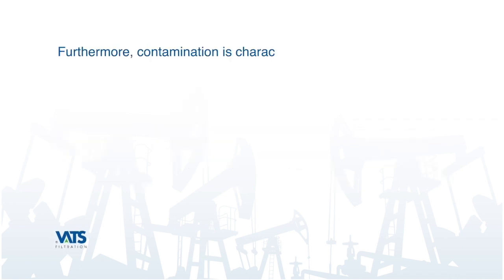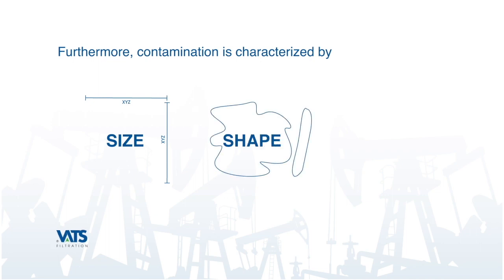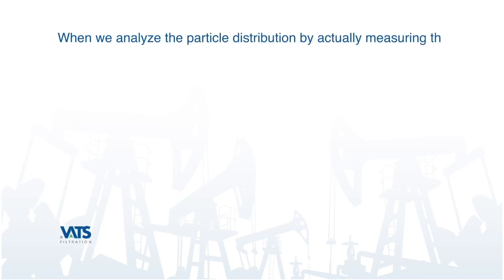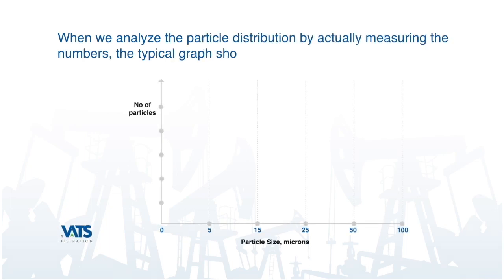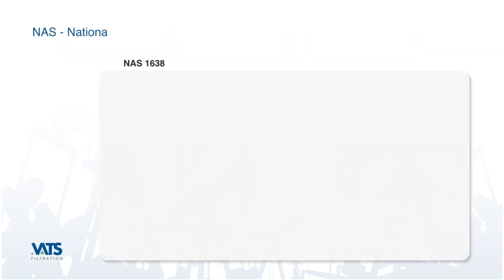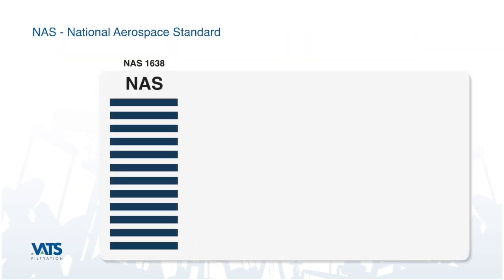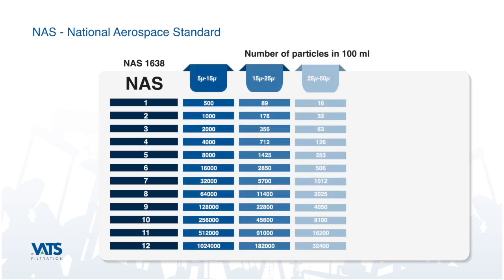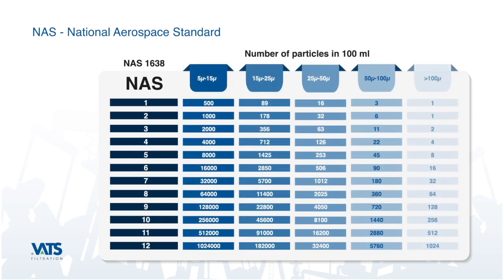The contamination is characterized by the size, shape, and quantity of particles. When we analyze the particle distribution by actually measuring the numbers, the typical graph shows that the numbers are maximum for the smallest size and lower as the size increases. The NAS 1638 standard divides the particle count into five distinct bands.